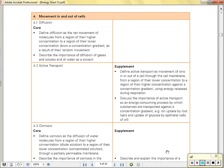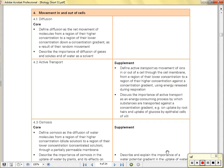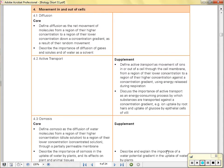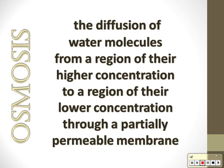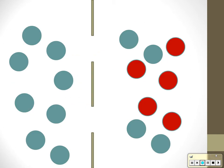Molecules moving in and out of cells is a very important topic, and there are two ways it happens: using energy and not using energy. We'll start with osmosis. Osmosis is the diffusion of water molecules from where there are a lot of water molecules — a higher concentration — to where there is a lower concentration, through a partially permeable membrane. The filter allows water molecules to move backwards and forwards but will not allow the solute molecules to move.